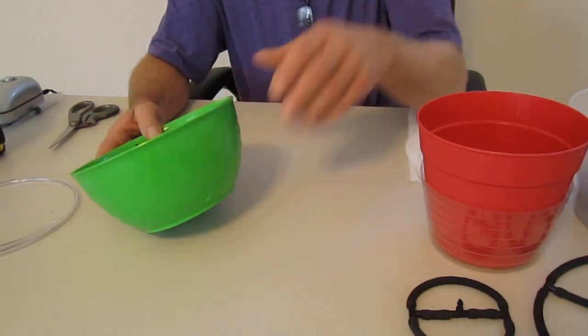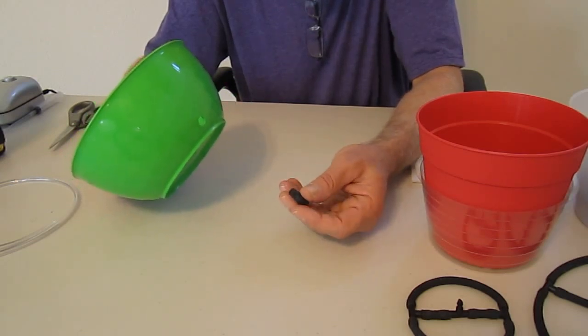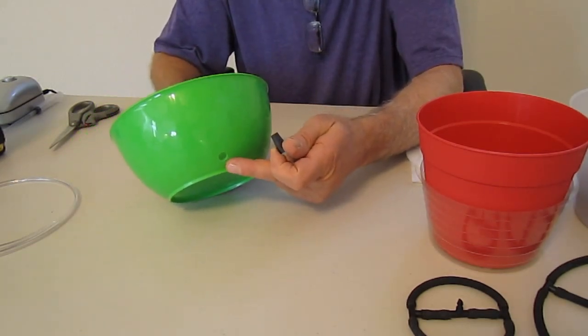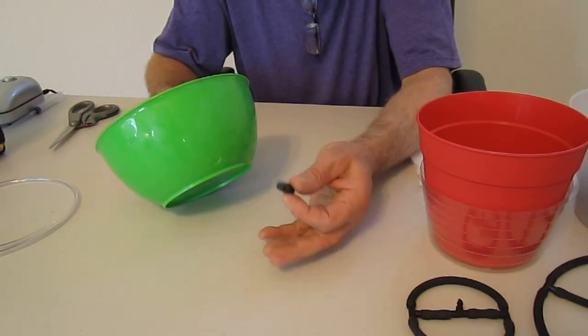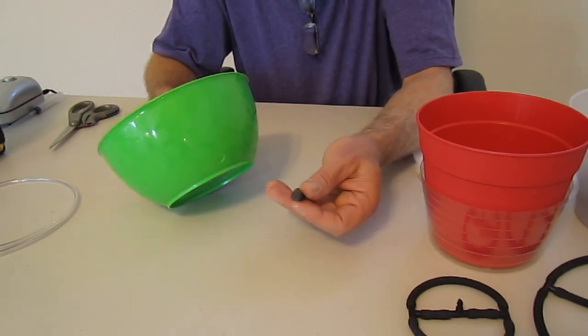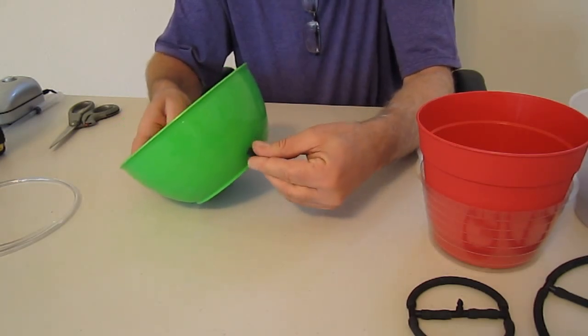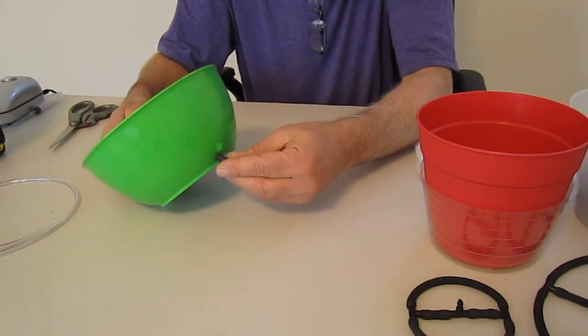If you decide that you want to drain your pot or your bucket, whatever you're using, you want to flush the root system out at any time, you can simply drill a hole in the bottom and then use what we call, it's just a simple rubber stopper. They're available at Lowe's, Home Depot, most hardware stores will have these, and you're going to plug that in. This will allow you to pull this and flush your plant how you see fit.